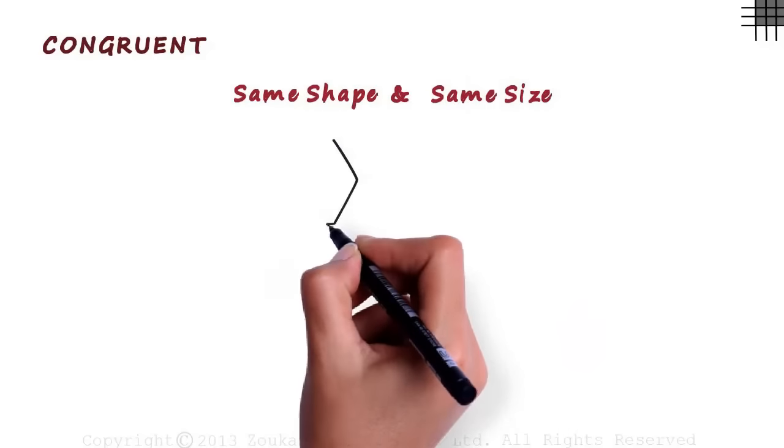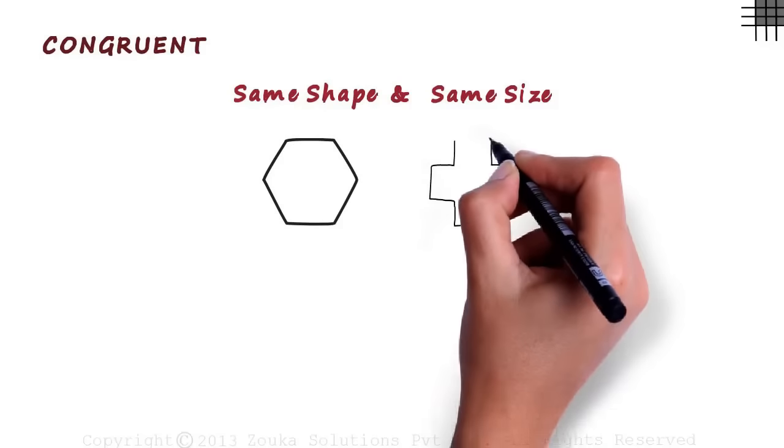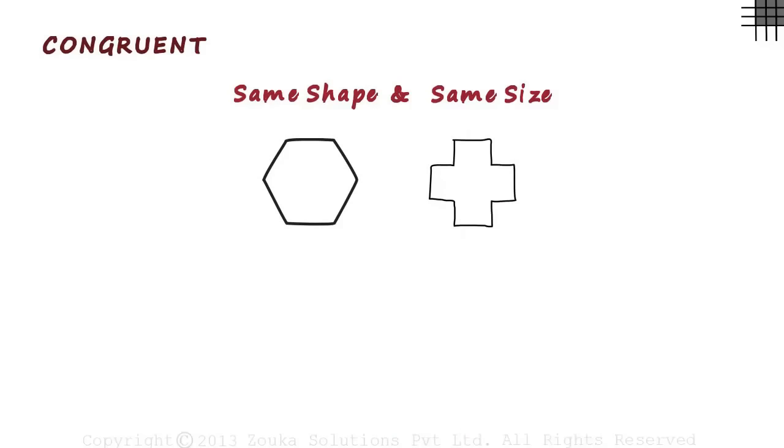Say we have a shape like this and another one like this. We can easily say that they are not congruent as they are completely different shapes.